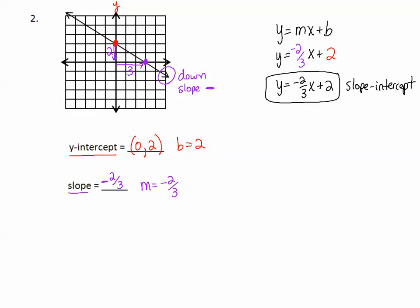Now we change it into standard form. Draw a line at the equals, and move the x onto the y side. Add 2 thirds x. Those go away, and we end up with 2 thirds x plus y equals positive 2.